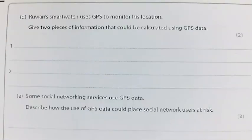Part D: Ruan's smartwatch uses GPS to monitor his location. Give two pieces of information that could be calculated using GPS data. Some students have lost marks here because they've written down that it's calculating his location. It's not doing any calculations on his location - it knows his location. We can assume that we already know where he is. We've already got that data. What can we calculate from that?